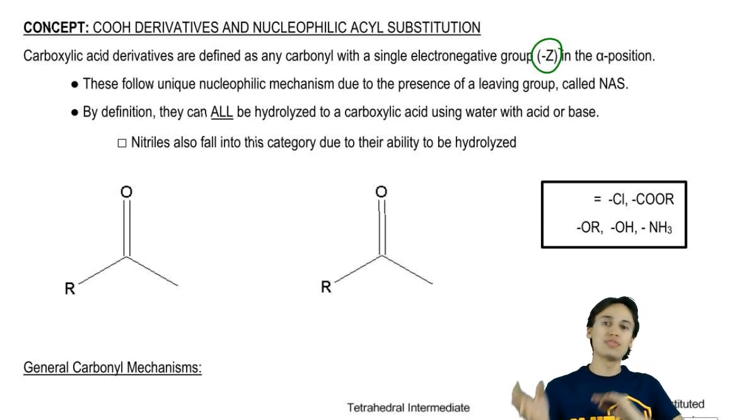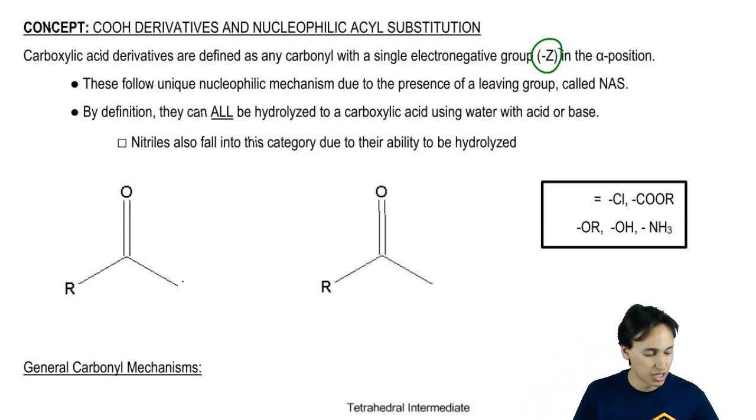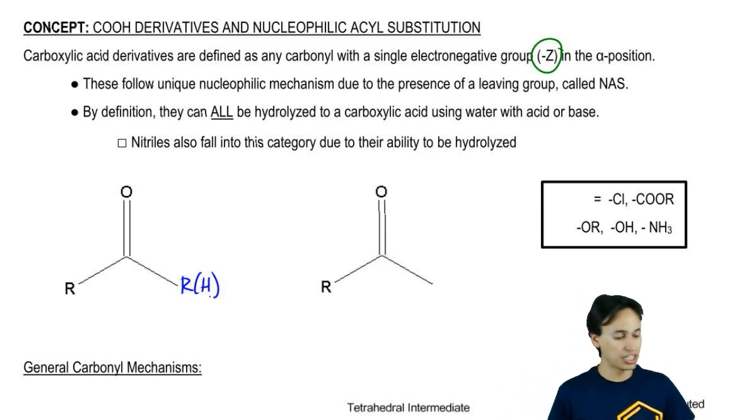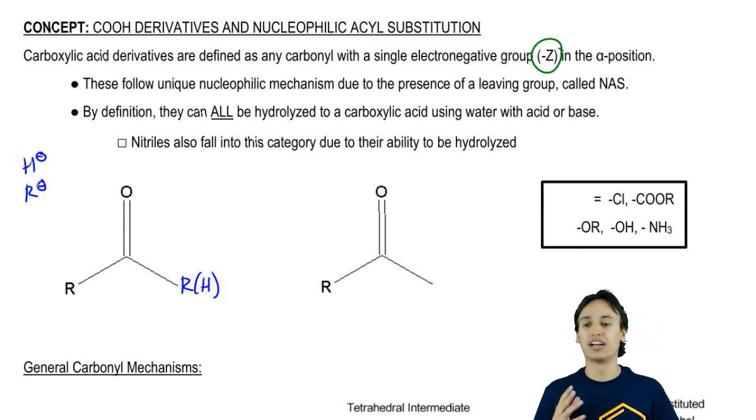Remember that in ketones and aldehydes, by definition, you're stuck with an R or an H. R and H are not electronegative at all. In fact, they make terrible leaving groups. If you think about H negative, that's a strong base. R negative, that's an even stronger base. These things are not good leaving groups.